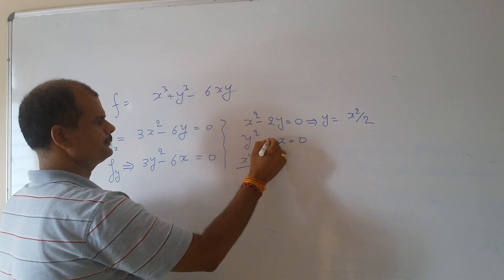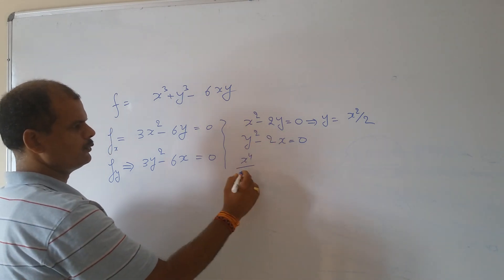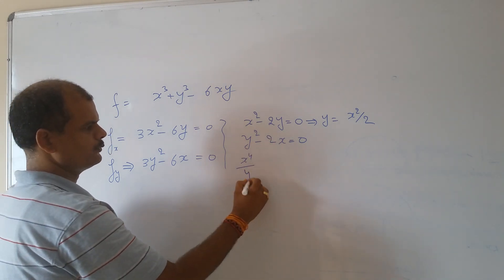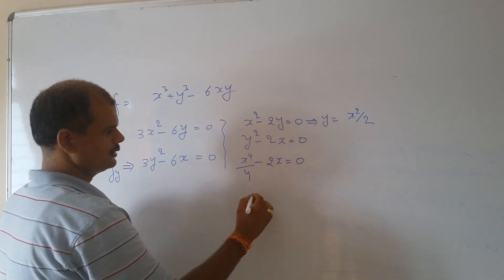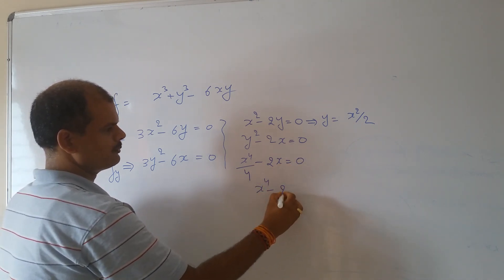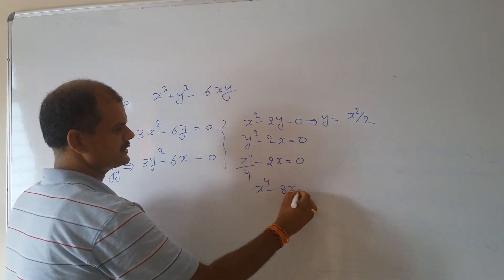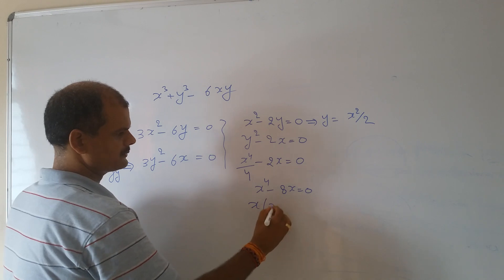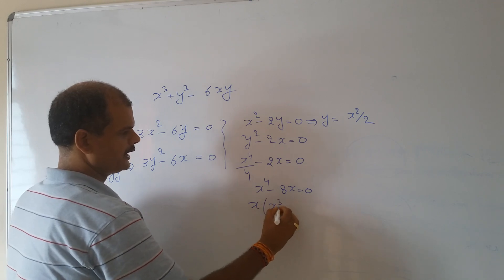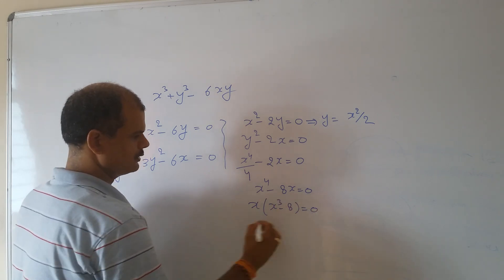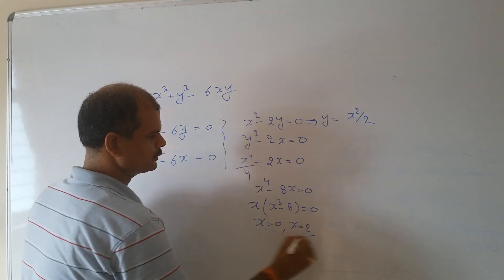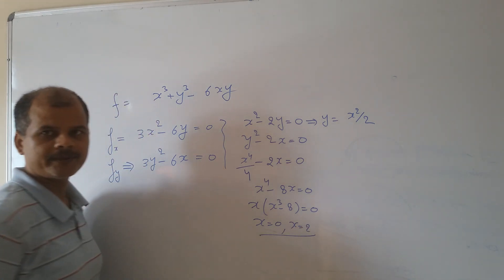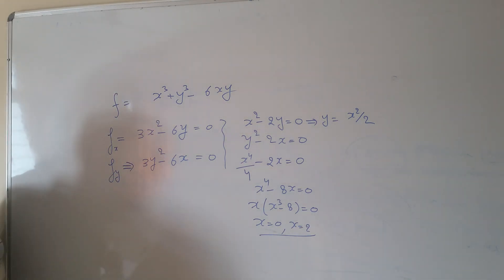Substituting y = x²/2 into the second equation, we get x⁴/4 minus 2x = 0, which gives x⁴ minus 8x = 0, so x(x³ minus 8) = 0. Therefore x = 0 and x = 2 are the two values.